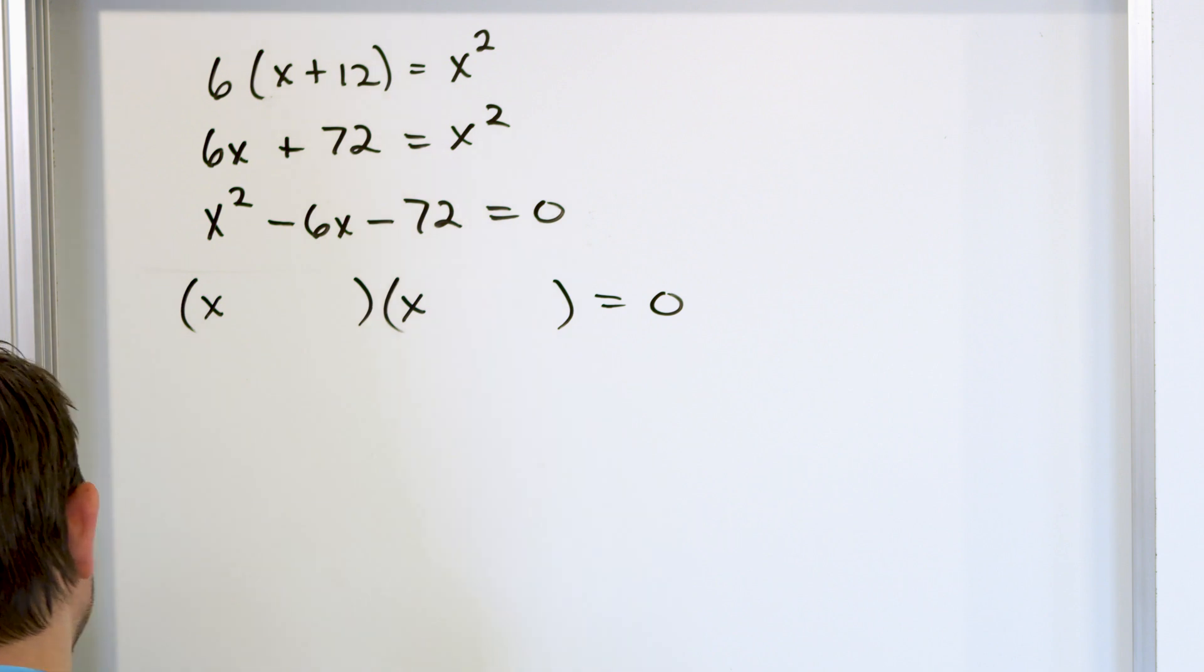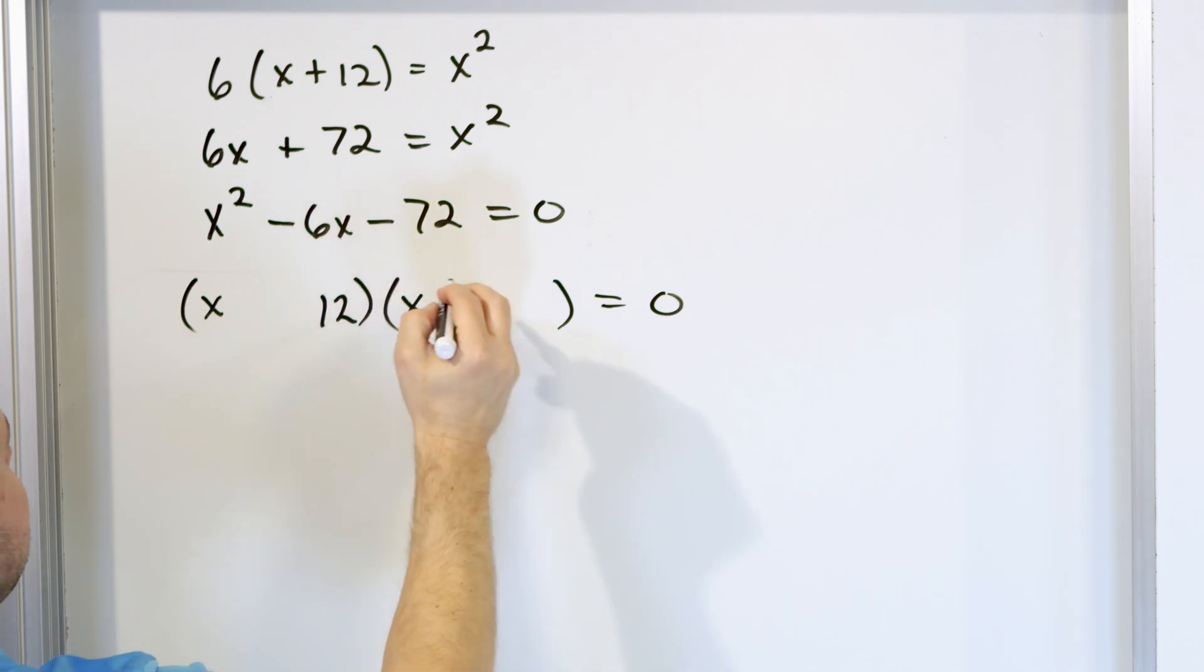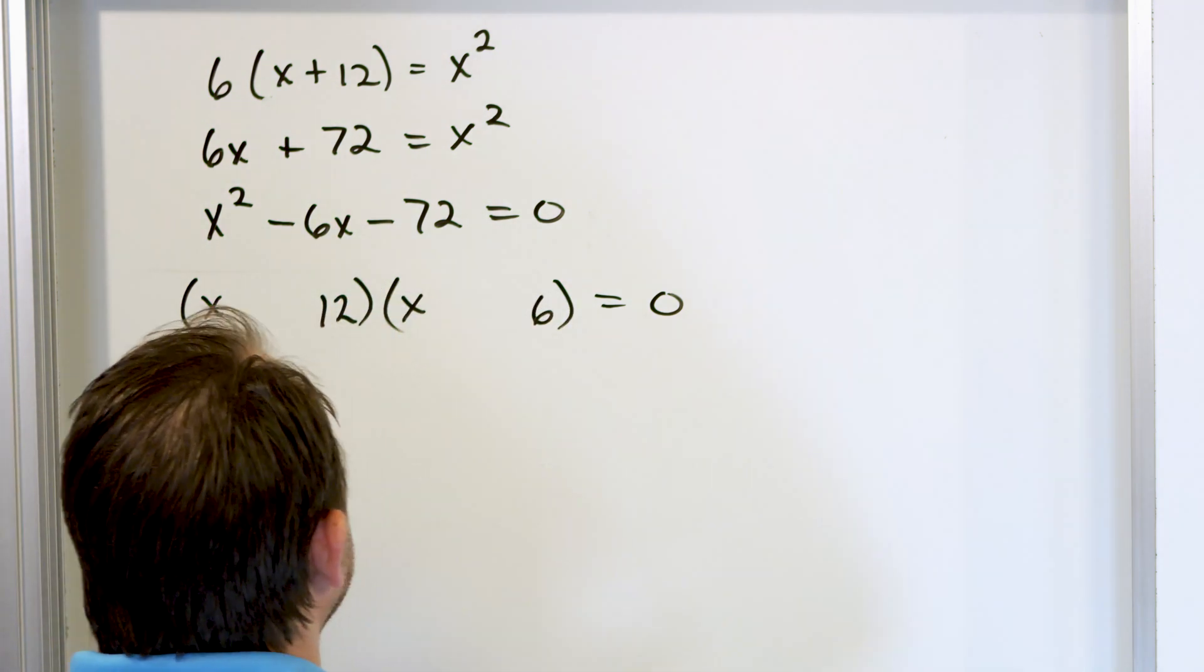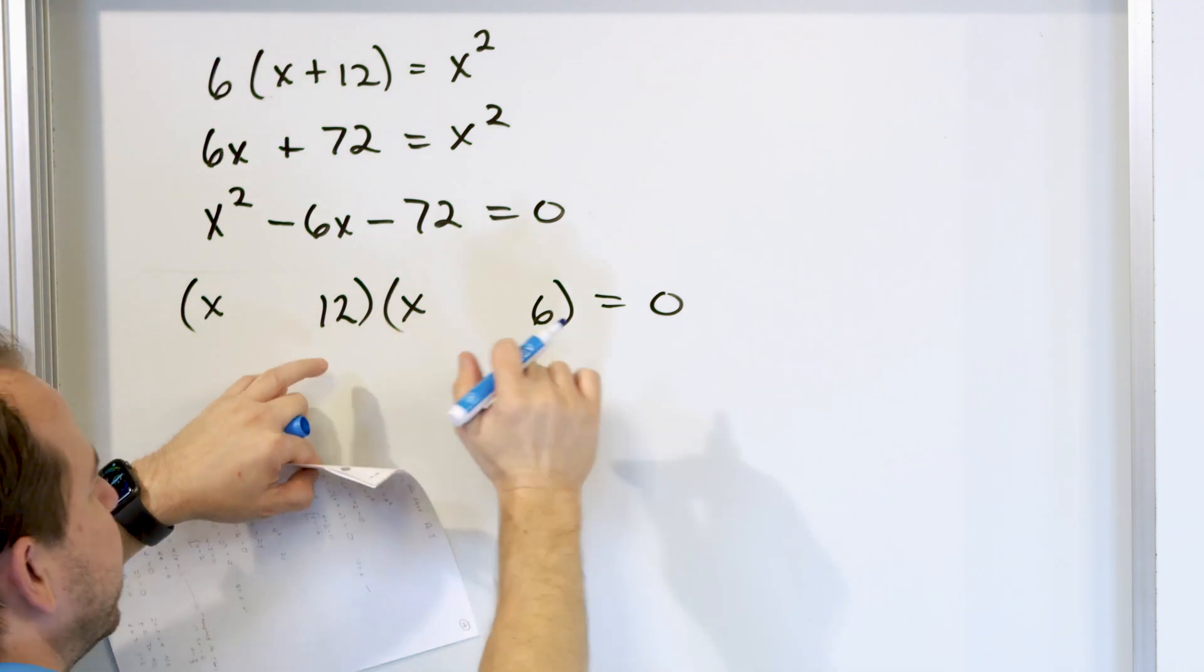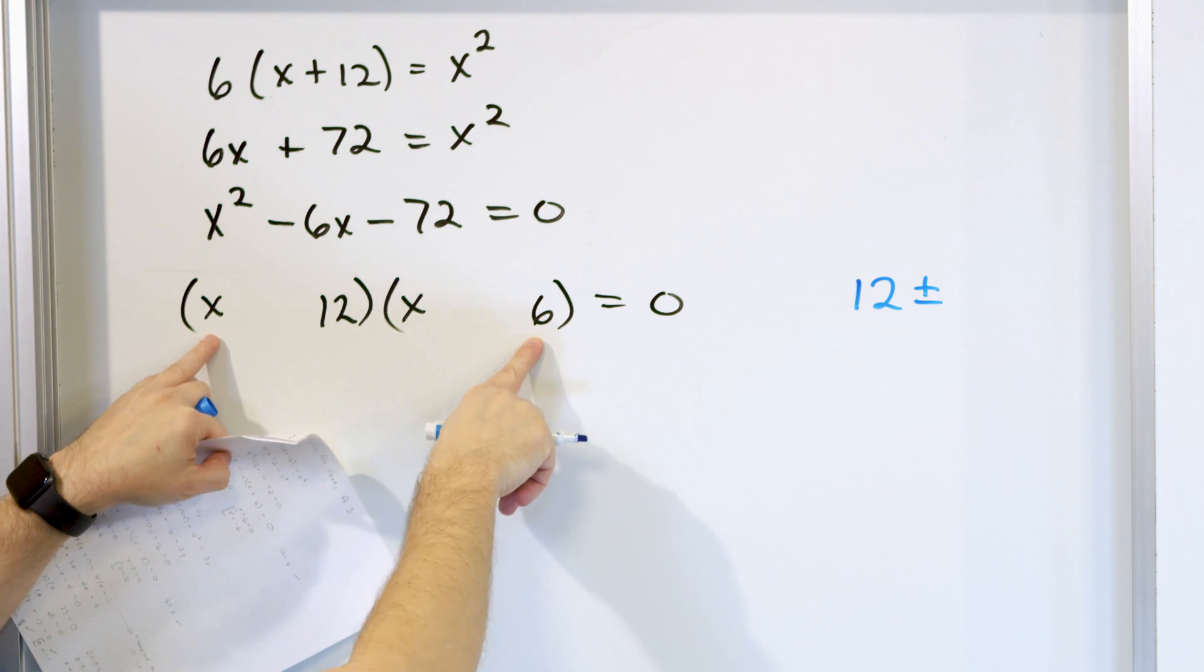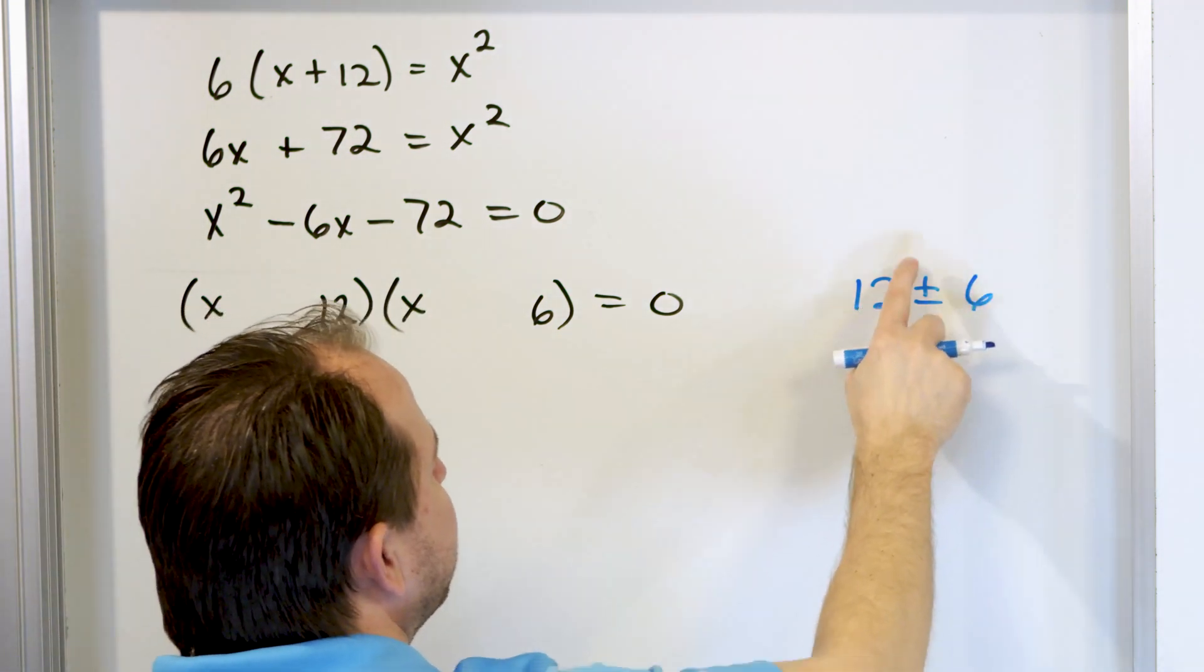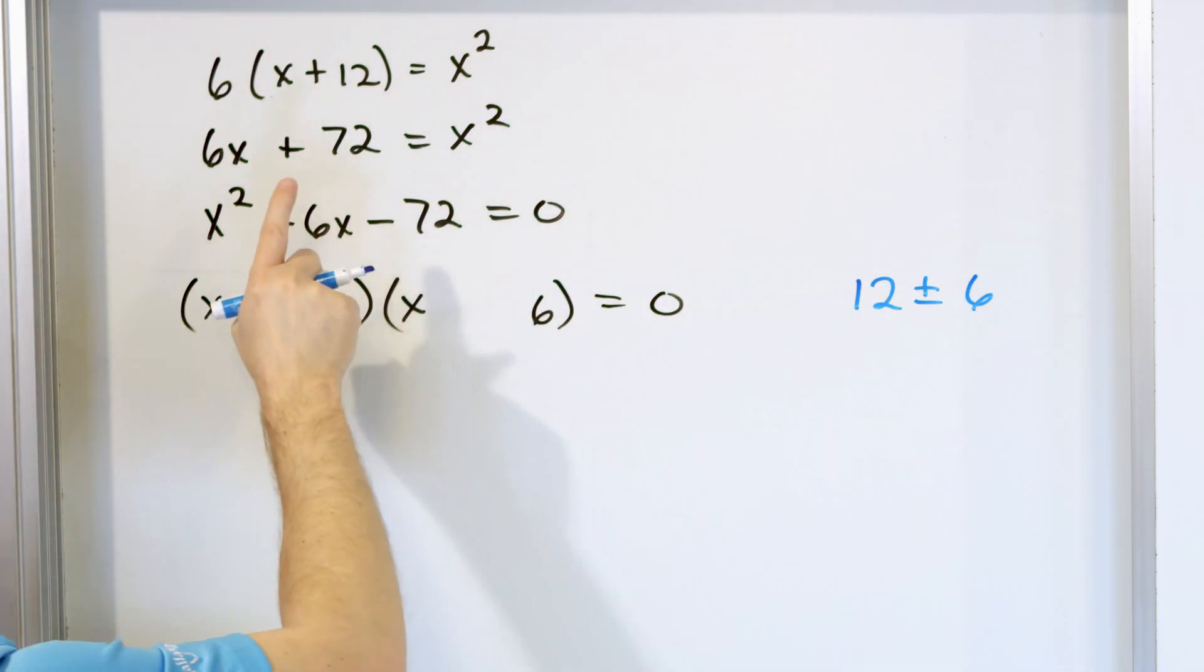And then I think, well, what times what will give me 72? I already just did the 12 times the 6, so let me try that. I'll put 12 times 6 is 72, and I'll see if that's even possible. So I look at my inner terms. That would give me a 12x, and then I'll add to that the 6x here, either plus or minus, depending on the signs, and I ask myself, 12 plus 6 or 12 minus 6? Can that equal 6? Yes, it can.